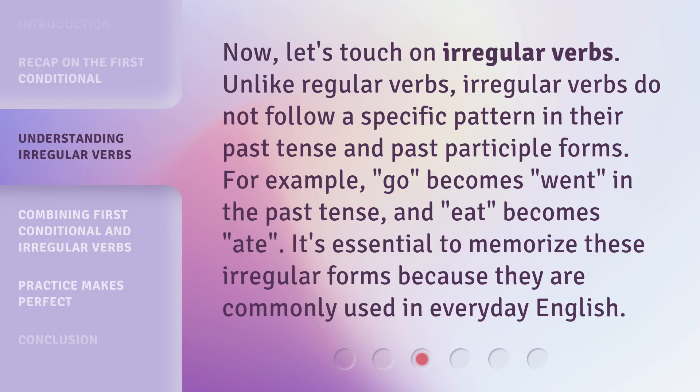Now, let's touch on irregular verbs. Unlike regular verbs, irregular verbs do not follow a specific pattern in their past tense and past participle forms. For example, 'go' becomes 'went' in the past tense, and 'eat' becomes 'ate'. It's essential to memorize these irregular forms because they are commonly used in everyday English.